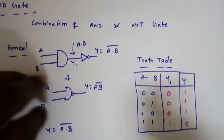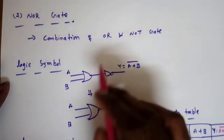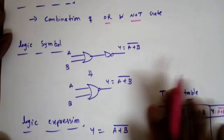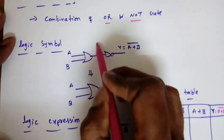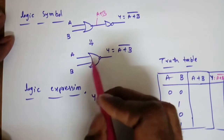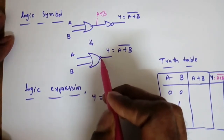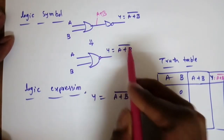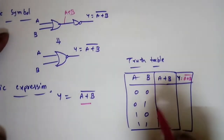Next is the NOR operation. The NOR gate is a combination of an OR gate and a NOT gate. The logic symbol is an OR gate followed by a bubble at the output. First we implement the OR gate giving A+B, then the NOT gate giving A+B whole bar. The bubble indicates inversion or complement. So A+B whole bar is the logic expression for NOR.